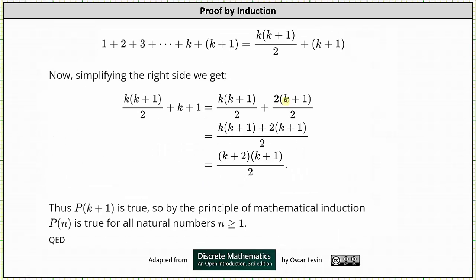So now focusing on the right side, we'll multiply (k+1) by 2/2 so that we have a common denominator. And now we can add the two fractions together, which in the numerator gives us k(k+1) + 2(k+1) all over 2.